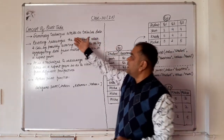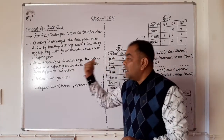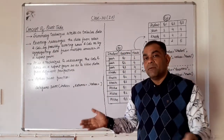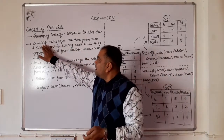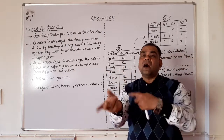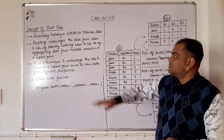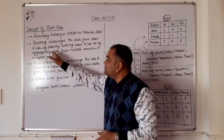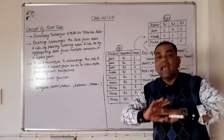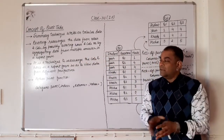Let's summarize what a pivot table is. First, pivoting is a summary technique that works on tabular data — a data frame is an example of tabular data. Second, pivoting rearranges data from rows and columns, possibly rotating rows into columns and columns into rows, or by aggregating data from multiple sources into a report form.